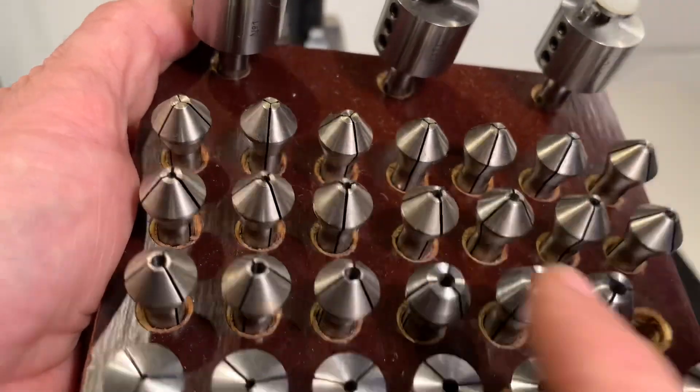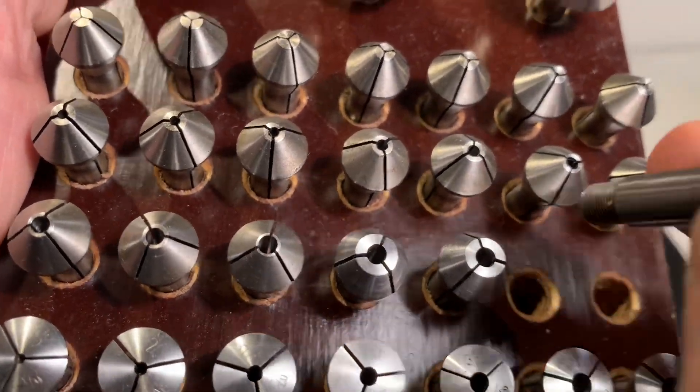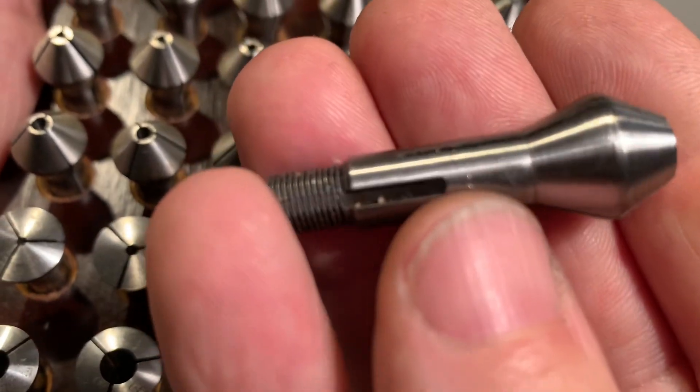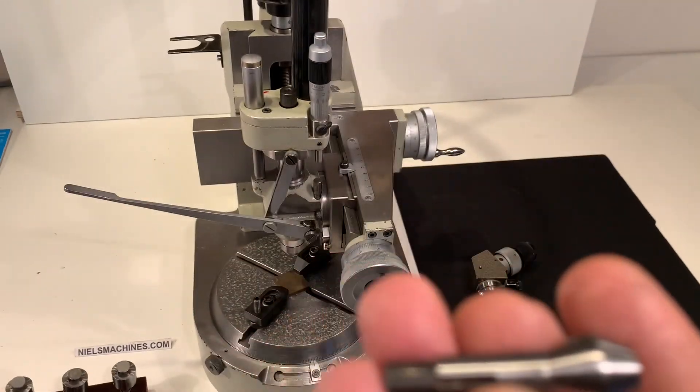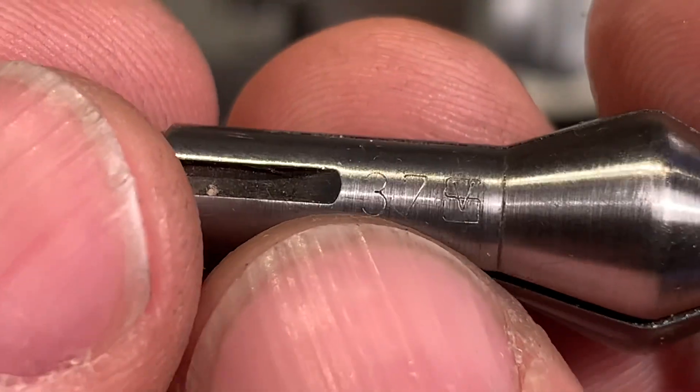And then here I have a special set of long nose B8 collets from Schaublin. The diameters here are written on the side. This is a 3.7 with a Schaublin logo.